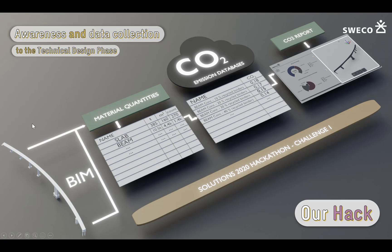In these last two days of hacking, we created an automatic system that can extract material quantities from a building information model. It can extract the CO2 values for those materials from the world's largest EPD cloud database. With this information we built an interactive report that summarizes the results. Finally, we save the results in our cloud databases so we can start building a history of how design decisions made during the design lifecycle impact the carbon footprint.